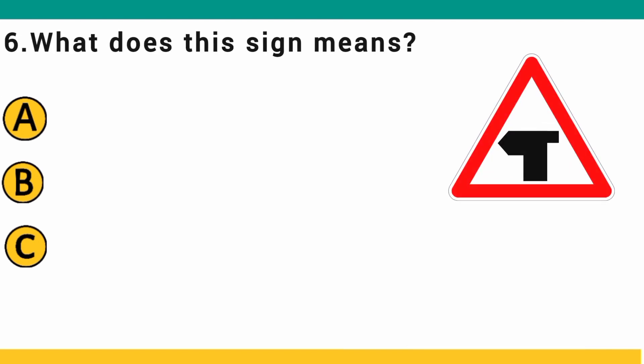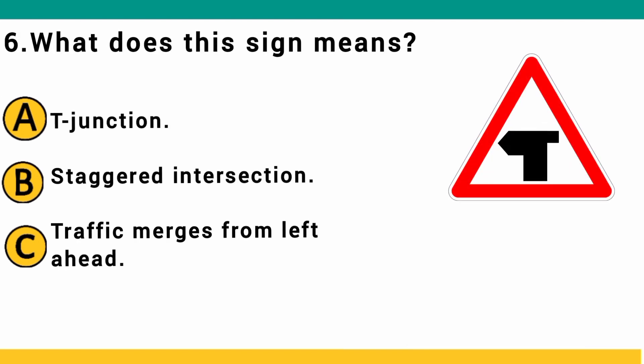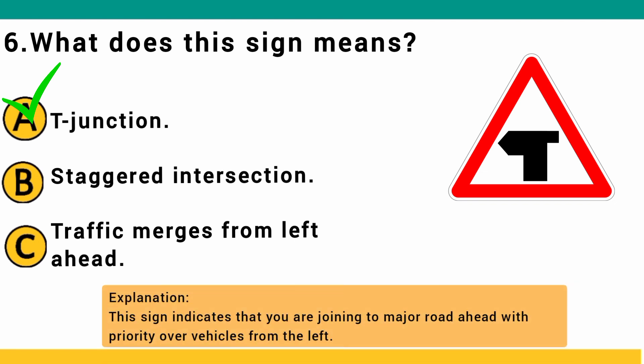What does this sign mean? A) T-junction, B) staggered intersection, or C) traffic merges from left ahead. The correct answer is A: T-junction. This sign indicates that you are joining a major road with priority over vehicles from the left.